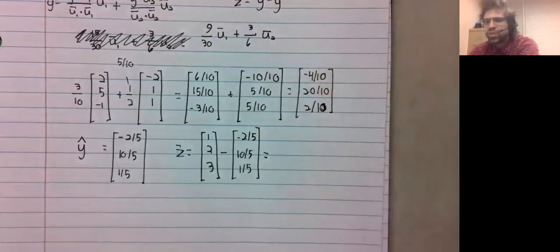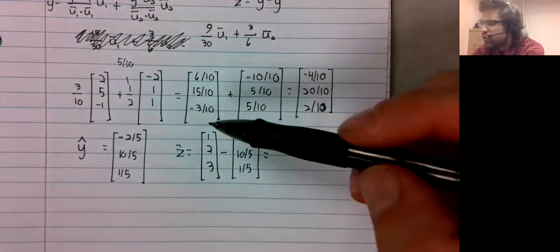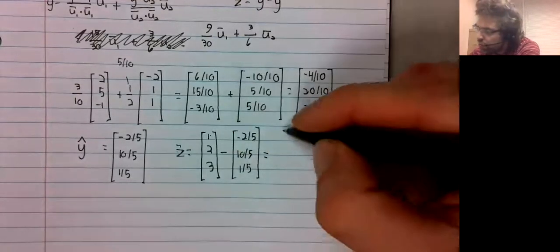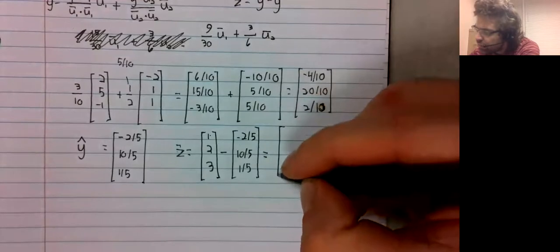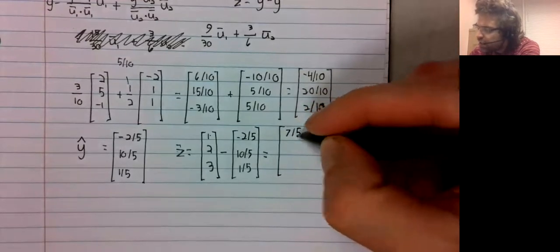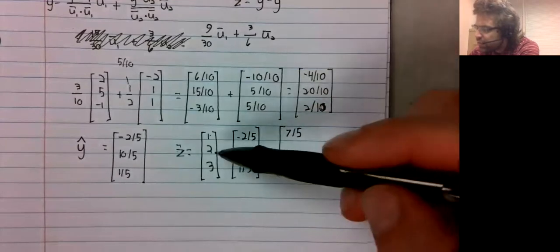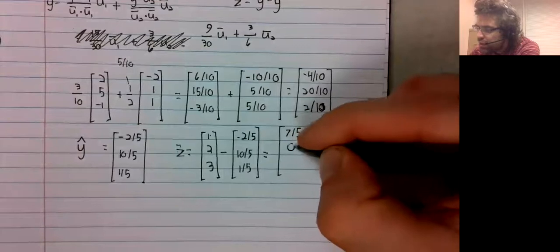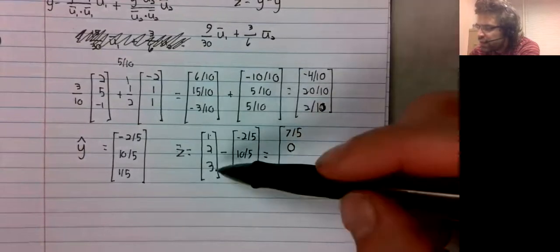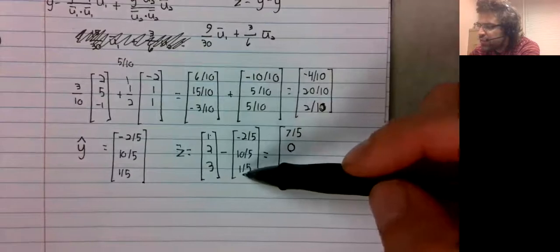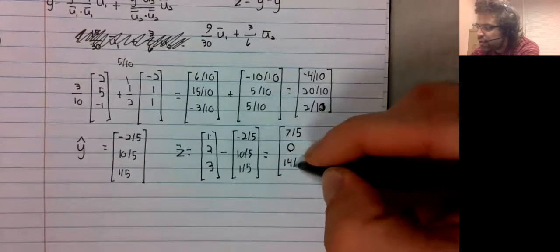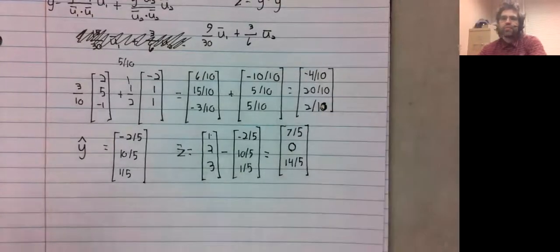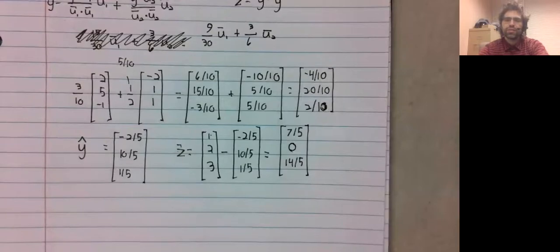And what does this work out to? 1 is 5 fifths plus 2 fifths is 7 fifths, 2 minus 2 is 0, 15 fifths minus 1 fifth is 14 fifths.